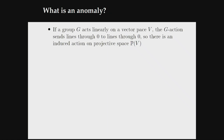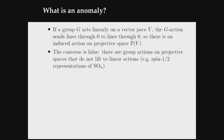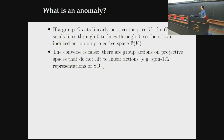Let's say you have a group acting on a vector space — a representation. A group acts on a vector space through linear functions; they send lines to lines, so they send points to points when we pass to projective space. But you can't go backwards: if I have a group action on projective space, there's no guarantee it lifts to a linear action. The famous example is the spin-1/2 representation of SO(N), which is only a projective representation — a nice action on CP^N that does not lift to C^{N+1}.